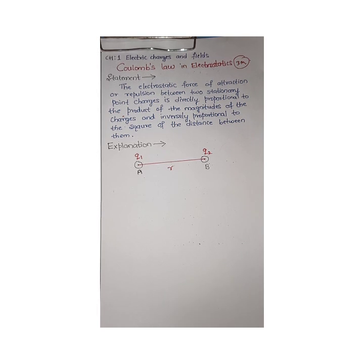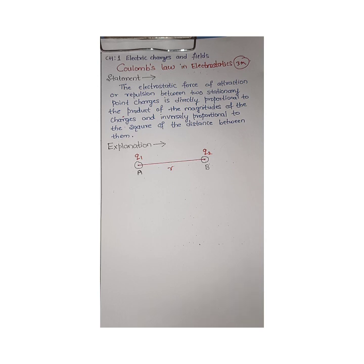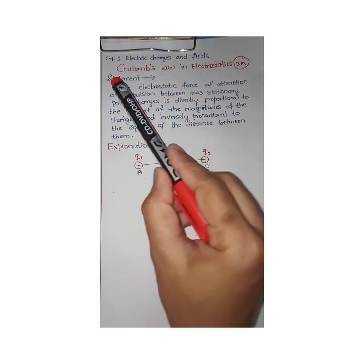In the year 1785, Coulomb measured the force of attraction or repulsion between two point charges using a torsion balance. He gave his observations as what we call Coulomb's Law in electrostatics. In an examination, we have to write the statement exactly as it is — not a single word should be changed.